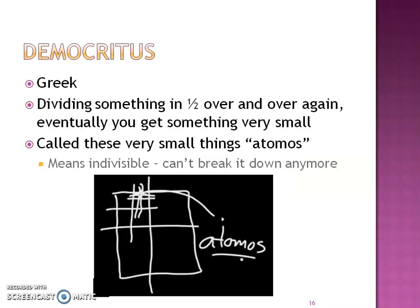He talked about Democritus, who was a Greek philosopher and the very first one to think: if we take something tangible and keep dividing it and dividing it, at some point you're going to get something so small. He called them 'atomos.' Atomos just means indivisible, which means you can't break them down any further. That's what makes an atom an atom — something you can't break down any further.